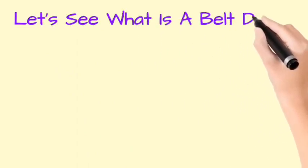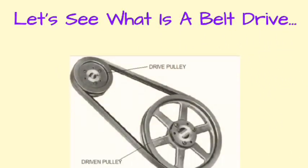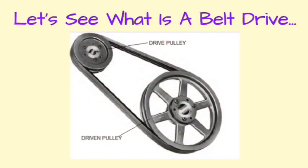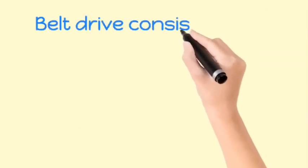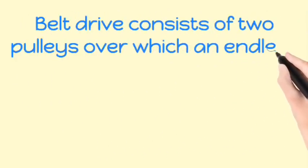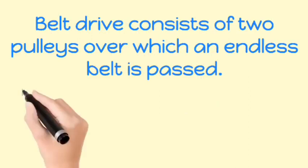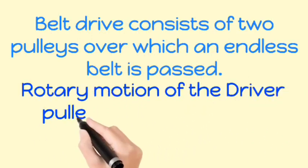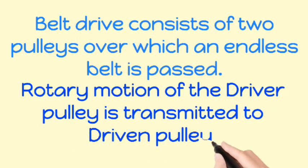Let's see what is a belt drive. Belt drive consists of two pulleys over which an endless belt is passed. Rotary motion of the driver pulley is transmitted to the driven pulley.